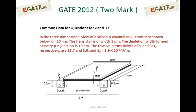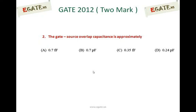Lambda is equal to 20 nanometers, transistor width is 1 micrometer, the depletion width formed at every PN junction is 10 nanometers. The relative permittivity of silicon and silicon dioxide are 11.7 and 3.9 respectively, and epsilon-naught is 8.9×10⁻¹² farad per meter. We need to calculate the gate-source overlap capacitance — the options are 0.7 femtofarad, 0.7 picofarad, 0.35 femtofarad, or 0.24 picofarad.